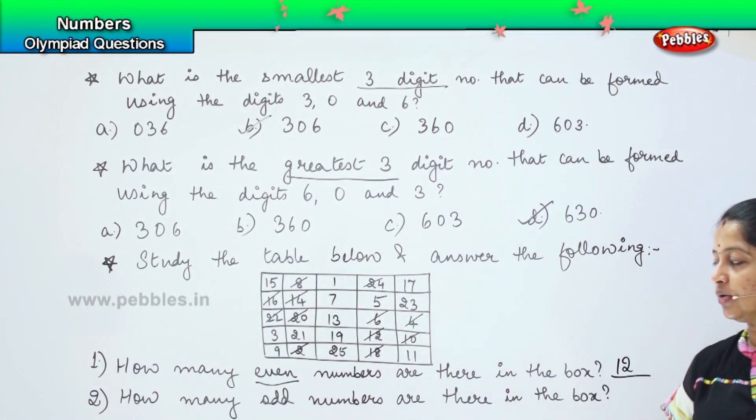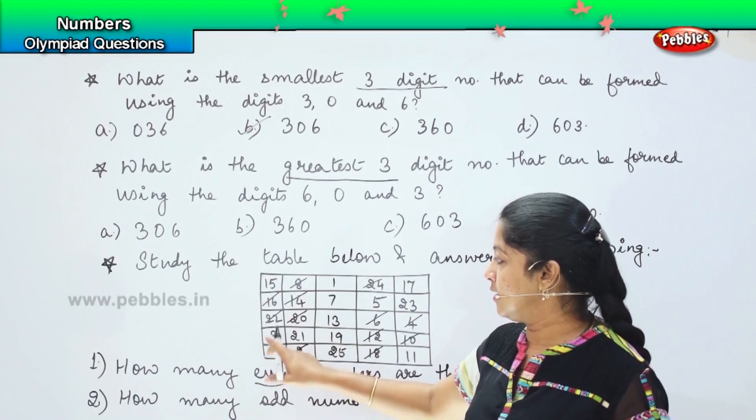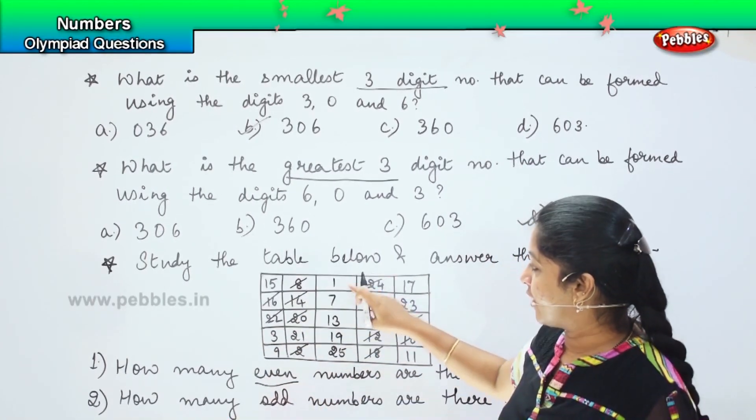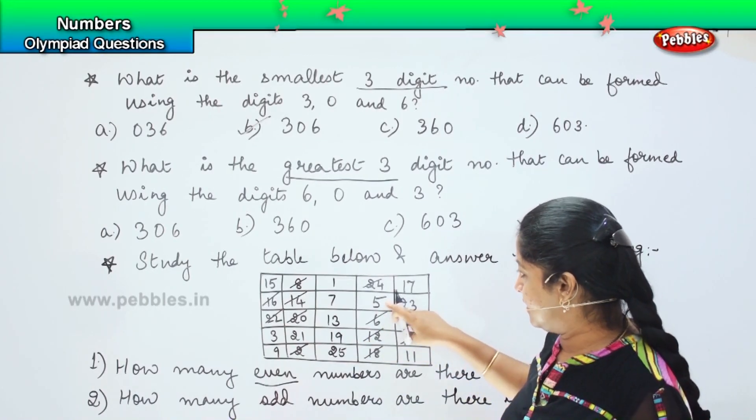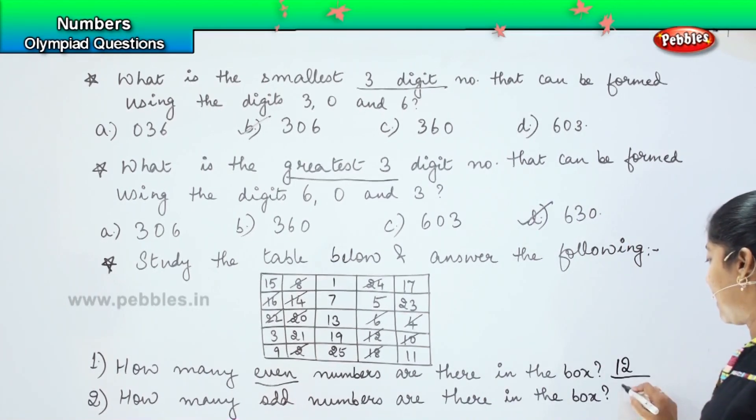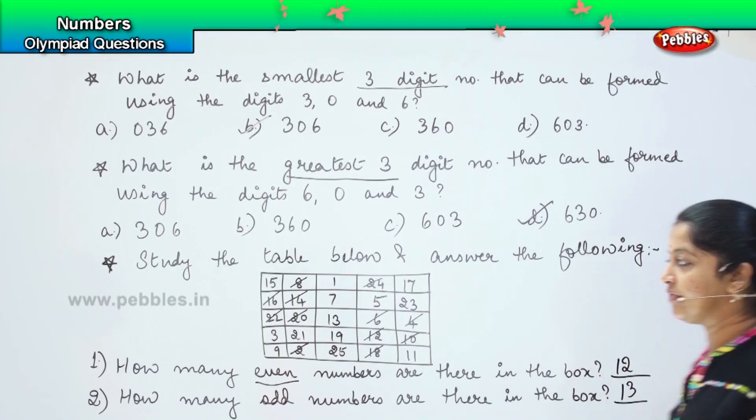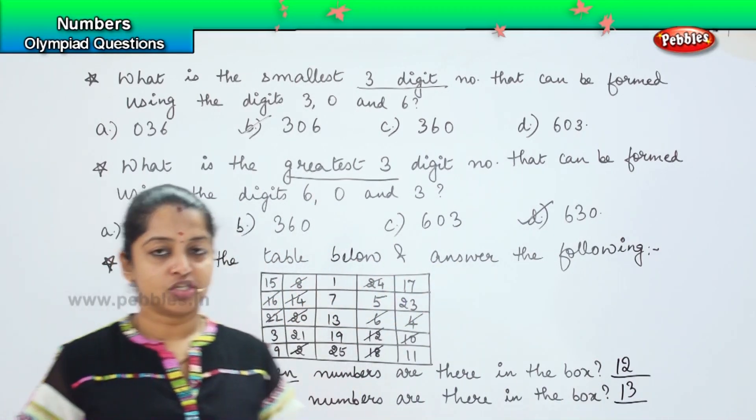Now since we have striked out the even numbers, it is easy for us to count the odd numbers, right? Shall we count the odd numbers? 1, 2, 3, 4, 5, 6, 7, 8, 9, 10, 11, 12 and 13. I have 13 odd numbers in the box and 12 even numbers in the box. Is it clear children?